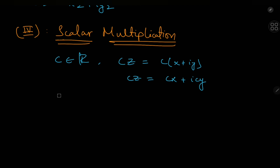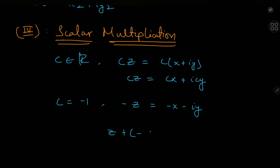By taking c to be −1, we can define the negative of z as −x − iy. So for every complex number z, we have its additive inverse −z, where z + (−z) = 0.